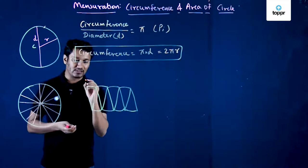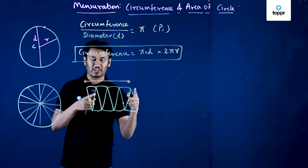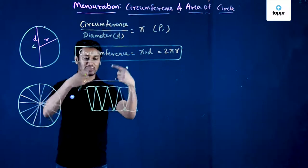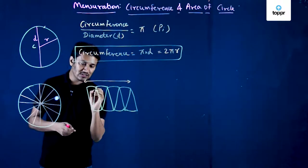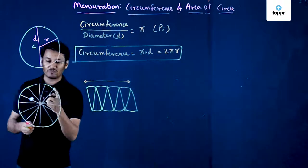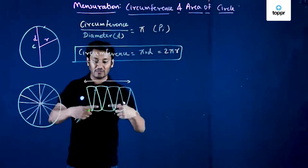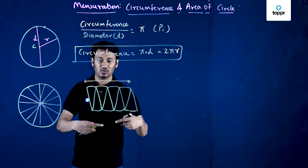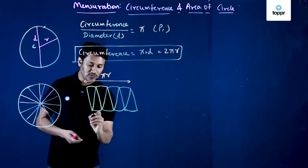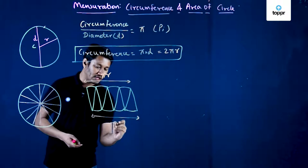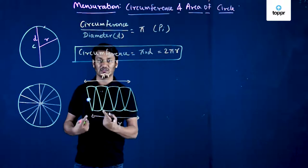What will be the length of this rectangle? This length is formed by half the number of sectors, because half the sectors are pointing up and the remaining half are pointing down. The curved edge is forming the circumference of the circle, so if half sectors are up and half are down, this length is half of the circumference, which is πr. So this length is πr.